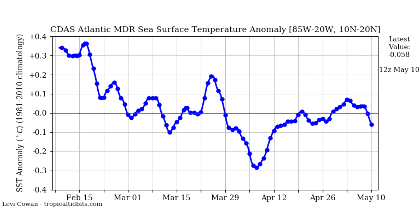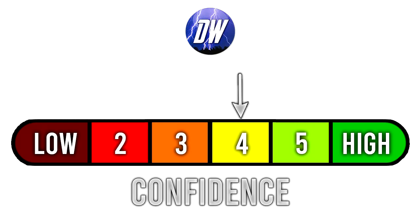I do have more hurricane season videos coming up, so we will talk a lot more about that. For today's confidence tab, we're at a four out of six, which is our maximum for long-range forecasts. We're only about two weeks away from the beginning of summer, and we're going to be coming out with our official summer forecast in the very beginning of June. Hopefully this was a great sneak peek and gave you some information about this upcoming summer of 2021.